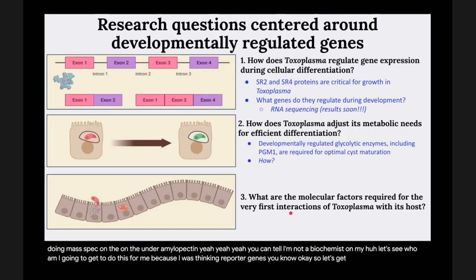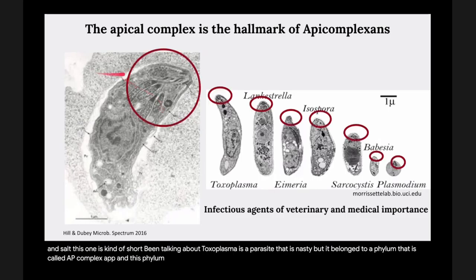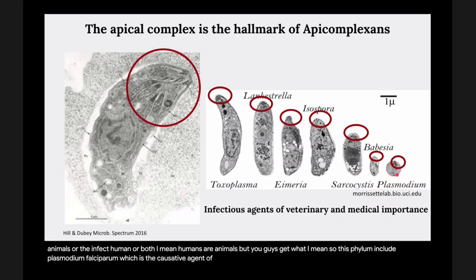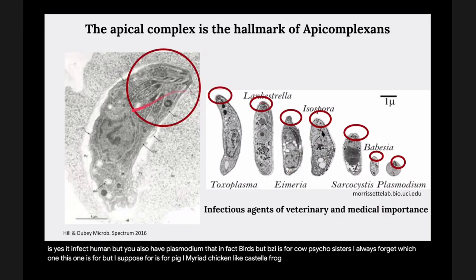Toxoplasma belongs to a phylum called Apicomplexa, in which all parasites are pathogenic — they infect animals or humans. This phylum includes Plasmodium falciparum, the causative agent of malaria killing a child every two minutes in the world. It also includes Babesia, which infects cows; Isospora for pigs; Eimeria for chickens; Lankesteria for frogs; Sarcocystis; and Neospora. So virtually every organism seems to have its own Apicomplexa parasite. Toxoplasma is used as a model organism to study the biology of these Apicomplexa.